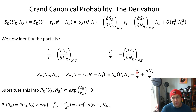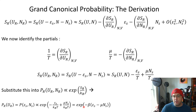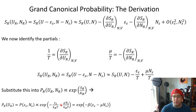We write out the expansion in terms of microscopic parameters E_s and n_s and macroscopic parameters temperature and chemical potential. Substituting that into the probability, we get an expression with all of that inside the exponential. The probability we're interested in is proportional to e to the minus β times the quantity (E_s minus μ·n_s), factoring β out of both terms.